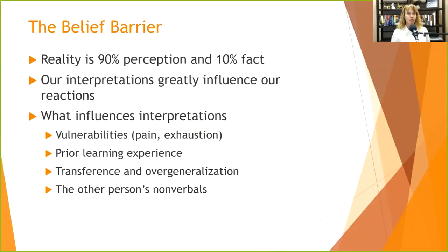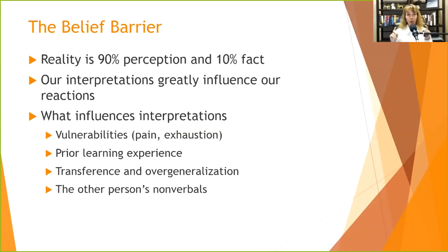For example, someone in chronic pain whose boss comes in and asks them to do something else might just lose it — interpreting that as the boss not caring and dumping even more on them, even though they're already exhausted. If I were talking to a client about that interaction, I might say: 'What did the boss know about what was going on with you? Was this person actually trying to make your life worse?' That's an interpretation — so we want to look at the cognitive distortions accompanying some of this.